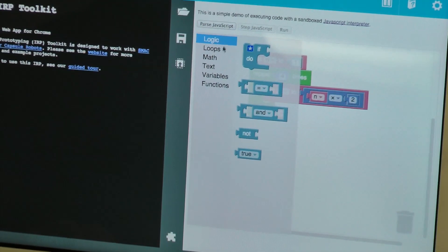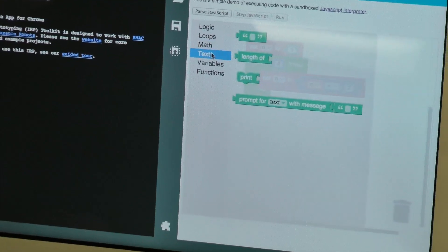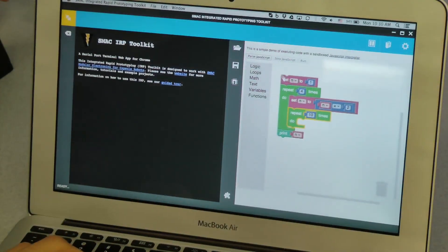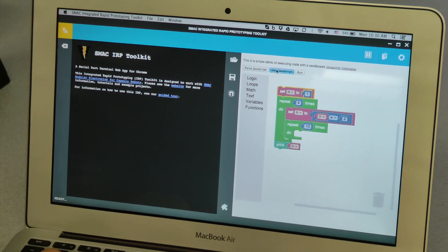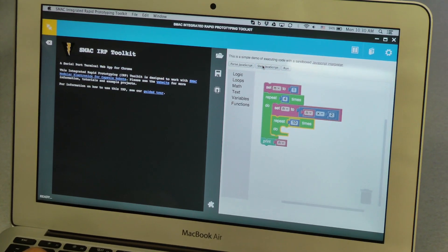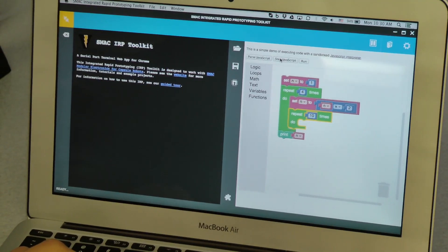We have the logic blocks, you have the loop, mathematics, text, variables. You can start to parse the program and step by step through it and you will see that action done by the robot.